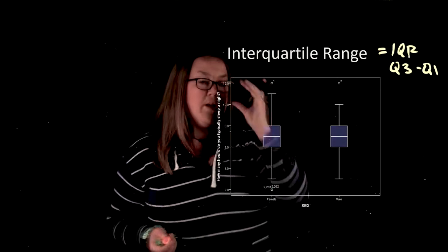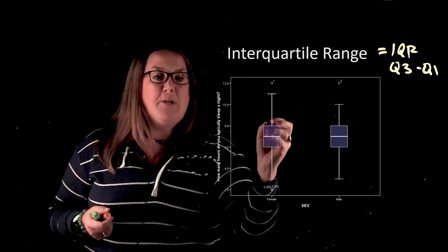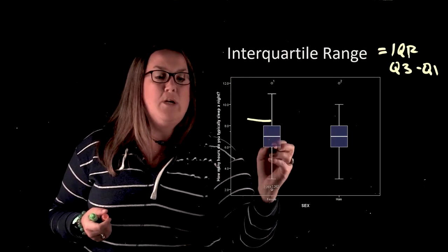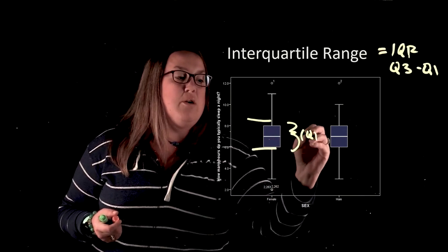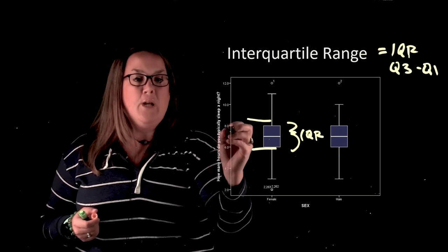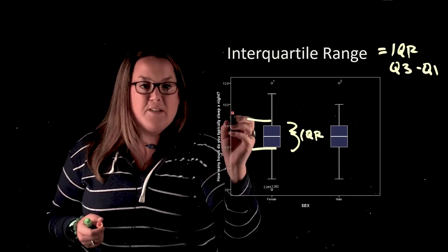So you can calculate the interquartile range when you look at a box plot. So here is Q3, here is Q1. Remember that is going to be your interquartile range is that middle 50%.